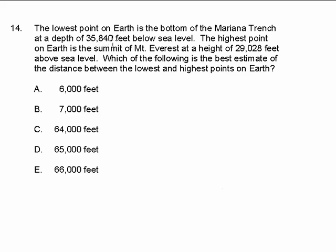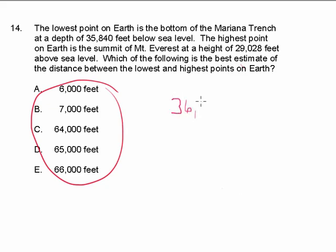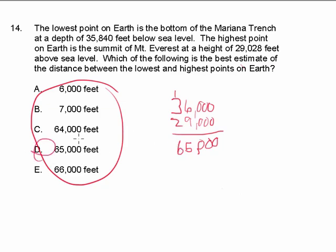It's asking us for the best estimate, which you can confirm by looking at the answer choices. So 35,840 rounds up to 36,000, and 29,028 rounds down to 29,000. I strongly suggest you do not attempt these in your head — it's easy to make mistakes. Nine plus six is fifteen, carry the one, three plus three is six: the answer is 65,000 feet.